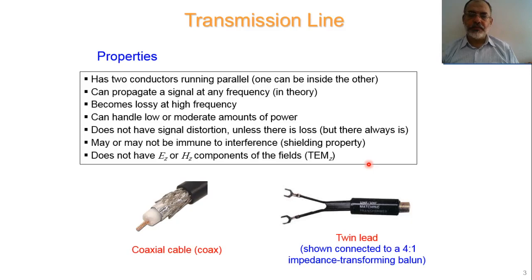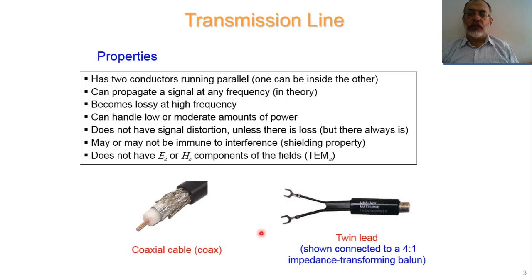We also have mismatch losses. The transmission line has a characteristic impedance, and if this characteristic impedance does not equal the characteristic impedance of the source and does not equal the characteristic impedance of the load, some power will be reflected from the source and some from the load — so not all the power from the source will go to the load. This is called mismatch losses. All these losses appear more at higher frequencies, so it becomes lossy at high frequencies.